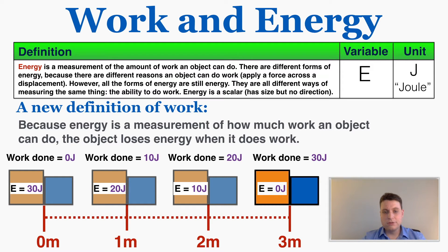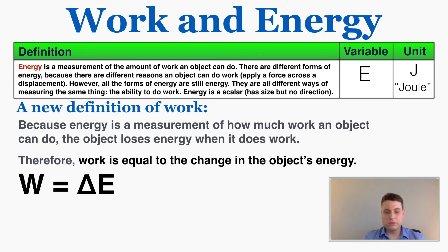You'll notice that the work done is equal to the change in energy of the orange box. By the time 20 joules of work have been done, the orange box's energy has changed by negative 20 joules. So work is equal to the change in energy of an object.